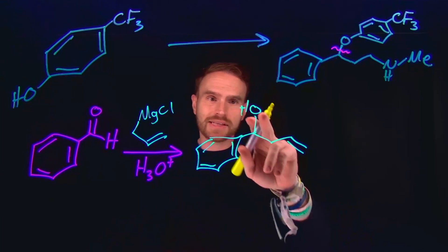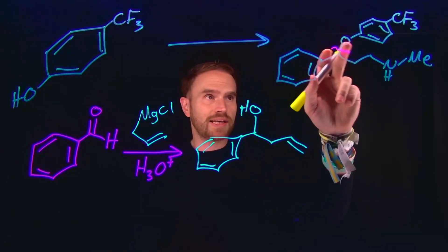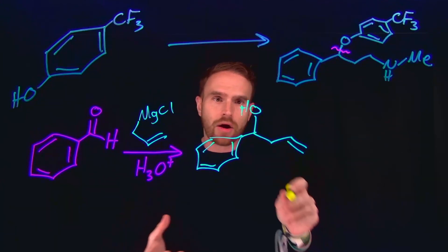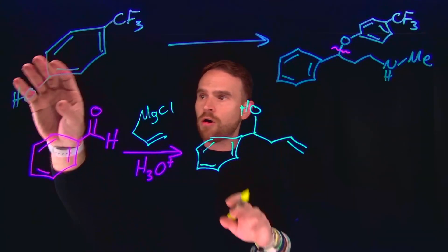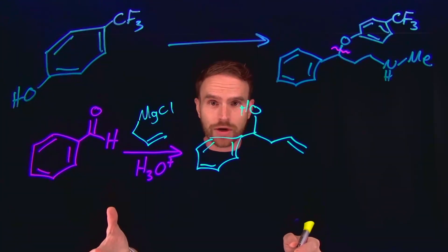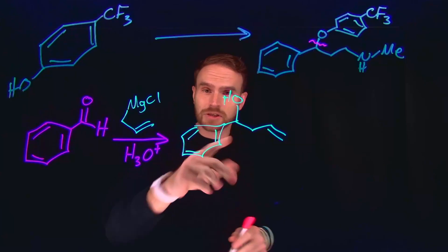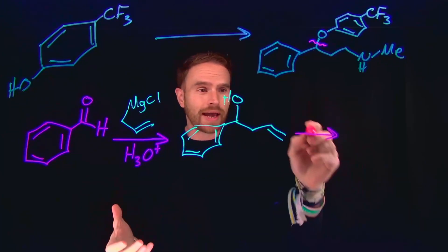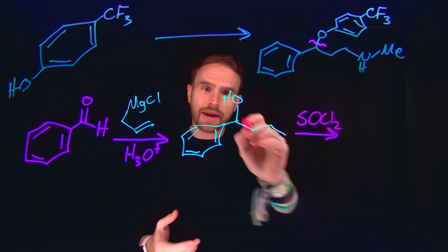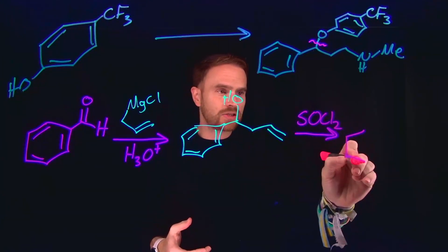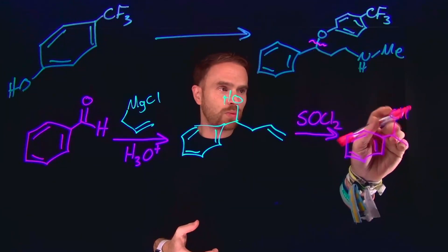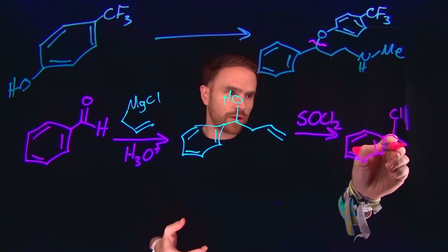And now I see that this alcohol position is where this ether needs to be from my other starting material. This means that I need to figure out a way to transform this alcohol into being an ether from here. One way to do that would be a substitution reaction. However, alcohols can't substitute other alcohols, but they can substitute alkyl halides. So if I use a group like thionyl chloride, then I can turn this alcohol into a chloride, giving us a position at which we can perform that substitution reaction.